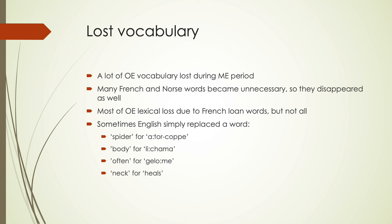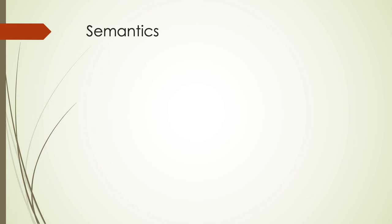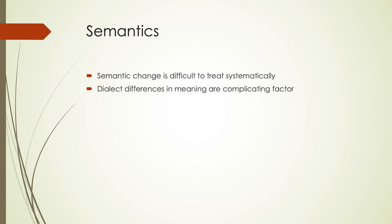Thinking about semantic changes briefly, the meanings of words from Old English into Middle English changed as well. It's harder to treat these systematically because they tend to change more sporadically than systematically when looking at individual words. This will change from one dialect to another, and there's some lack of written evidence from Old English to know exactly what the meaning would have been previously, so we have some limited examples of how much meanings have changed over time.